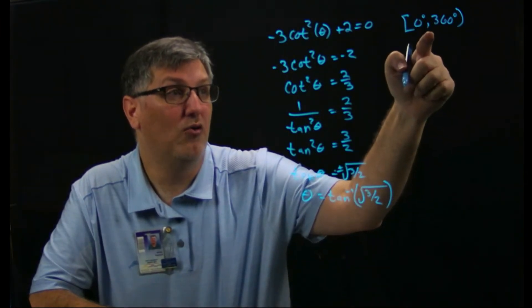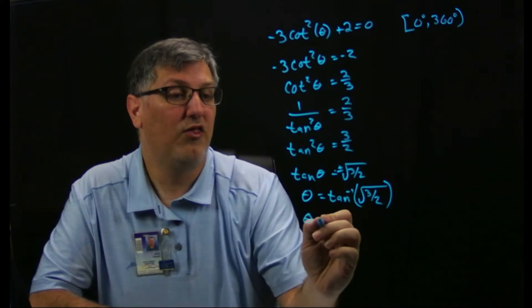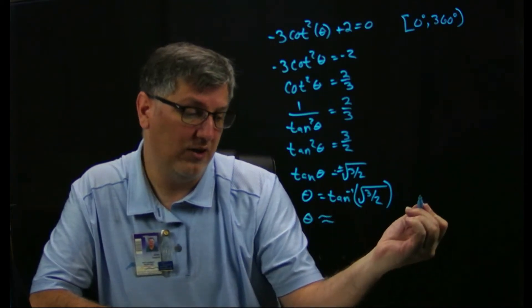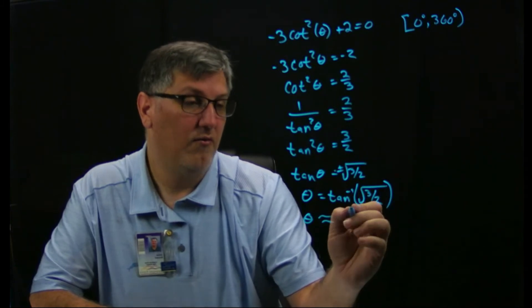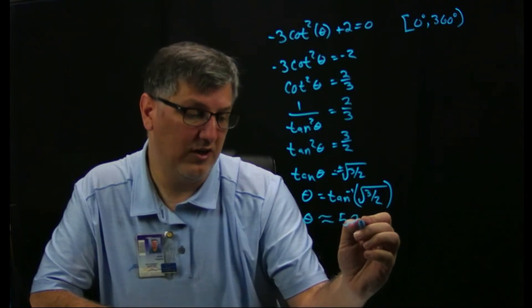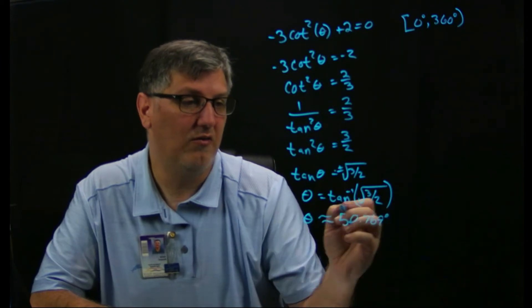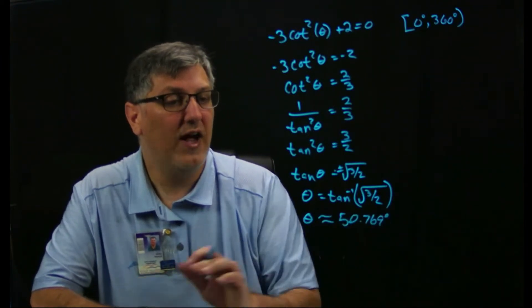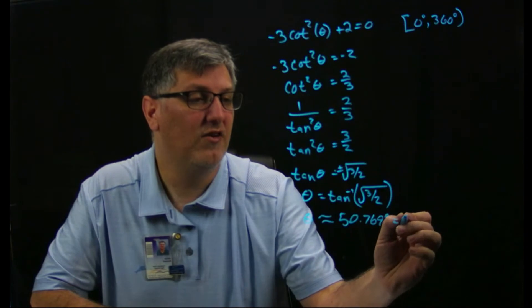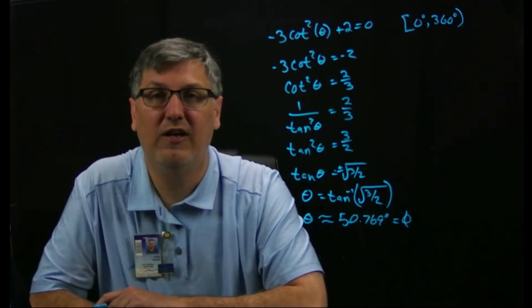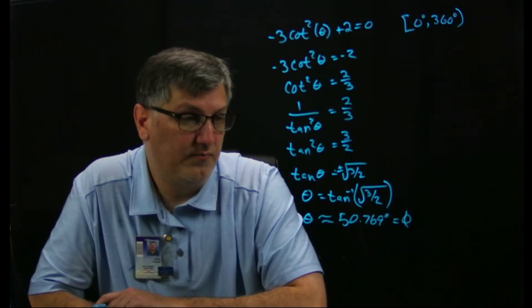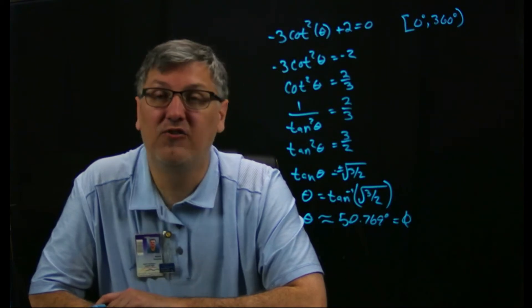All right, so when I do this I just plug this into the calculator. I need to be in degree mode because I need a degree. My theta is going to be approximately 50 point 769 degrees. All right, so that is my theta which conveniently this I'm going to treat as my reference angle phi.